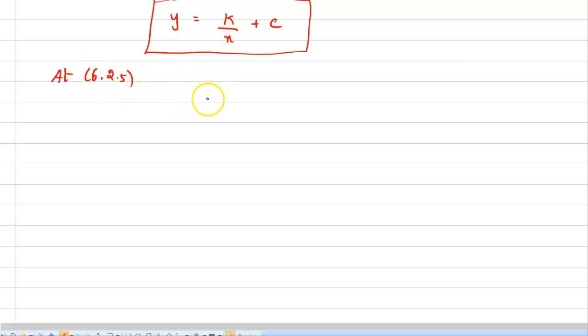At this point, the equation becomes 2.5 equals k by 6 plus c, which implies k plus 6c equals 15. This is the first equation.